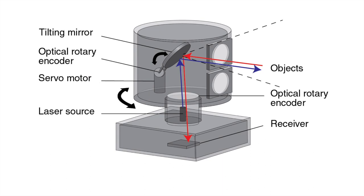Here's a diagram of how LiDAR works: a laser source — probably the most expensive part of the component — emits a laser toward a mirror, which reflects that laser outward toward objects in the environment. Once the laser hits an object, it reflects back toward the mirror, which redirects it into a receiver. Based on the difference in time between when the laser is emitted and when it's received, we can calculate how far away the object is.